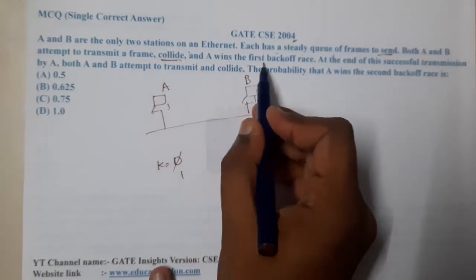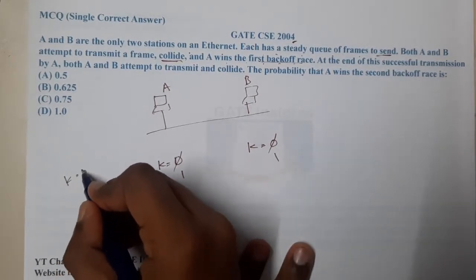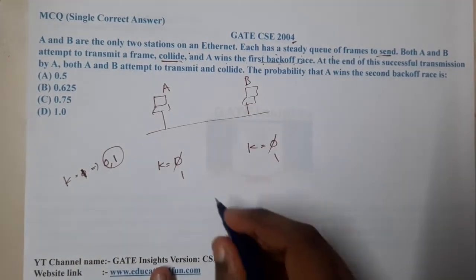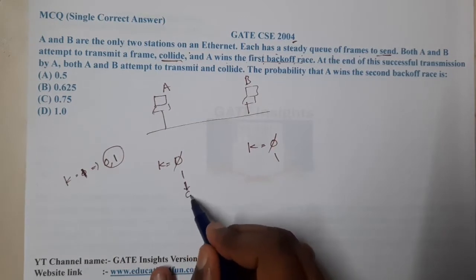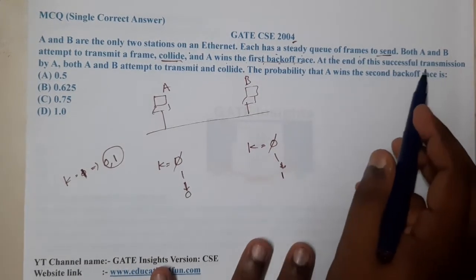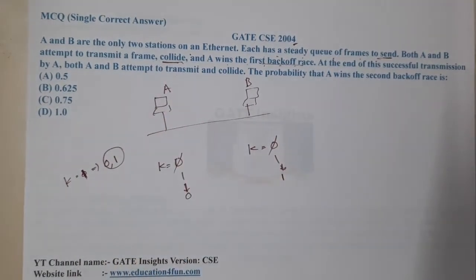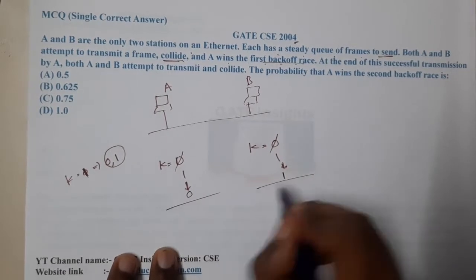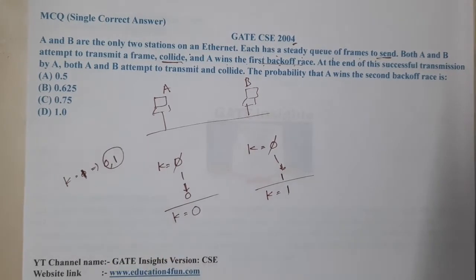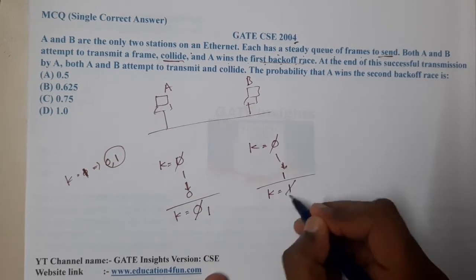When k equals one, the options are zero and one. They clearly said A won the backoff race, so A selected zero and B selected one. After A's successful transmission, both A and B attempt to transmit again and collide. So now A's k-value goes from one to two, and B's k-value stays or also becomes two.